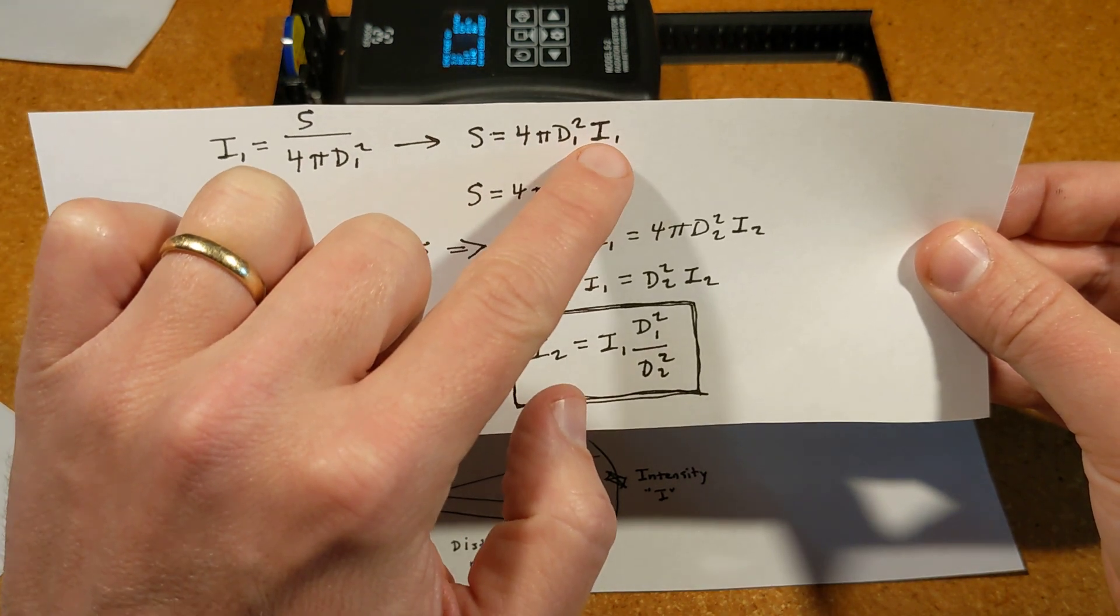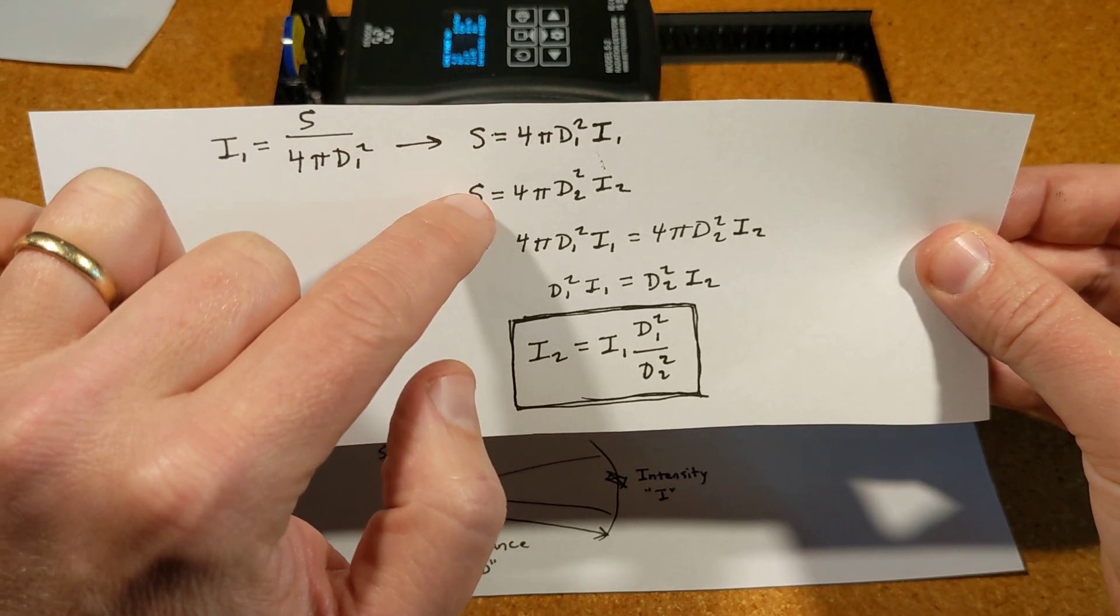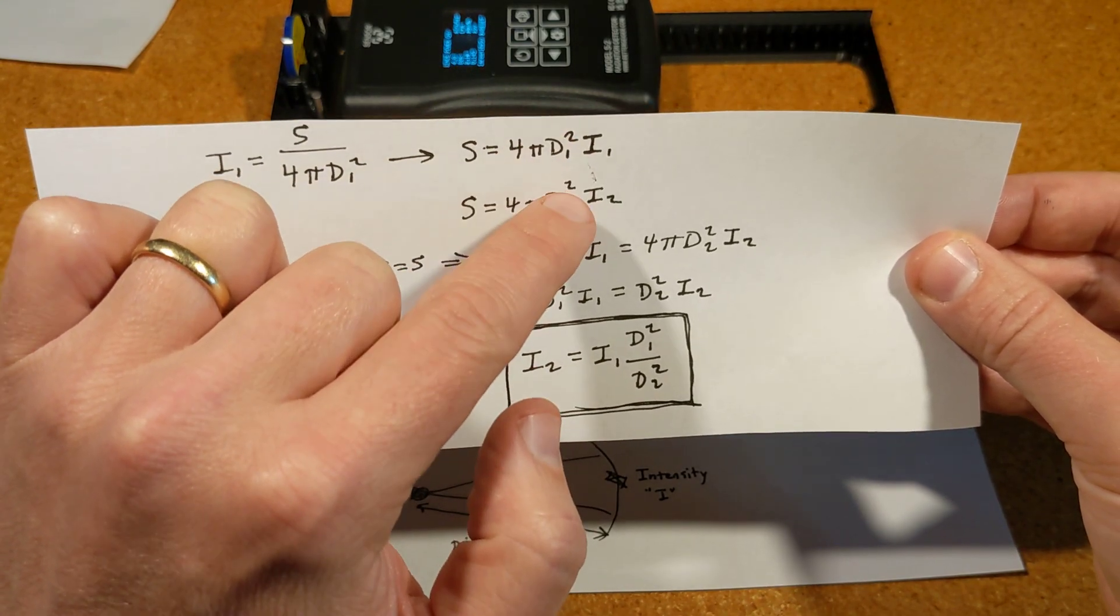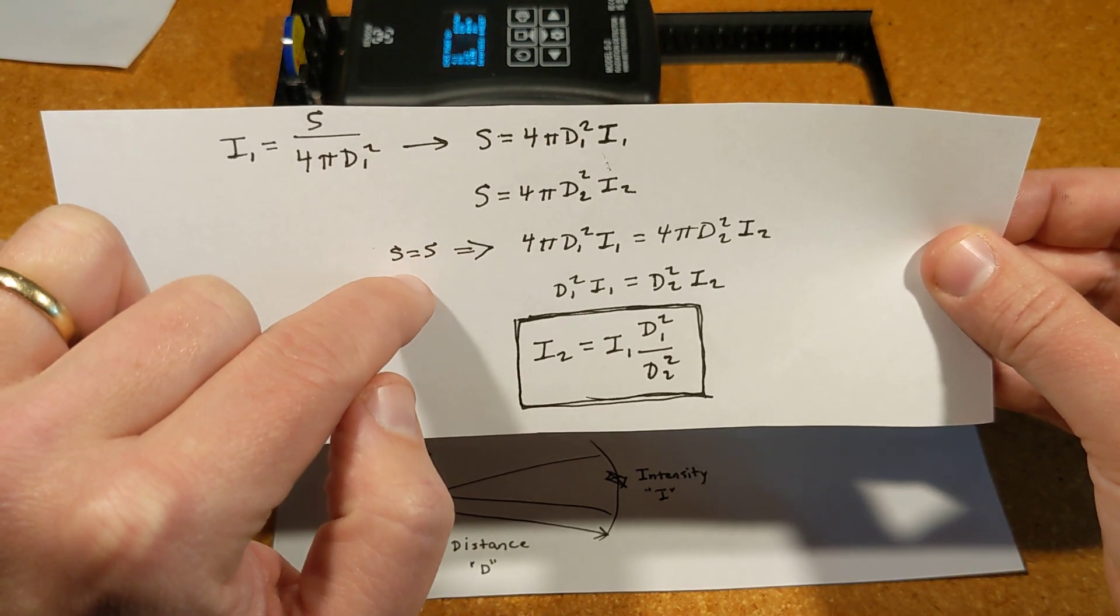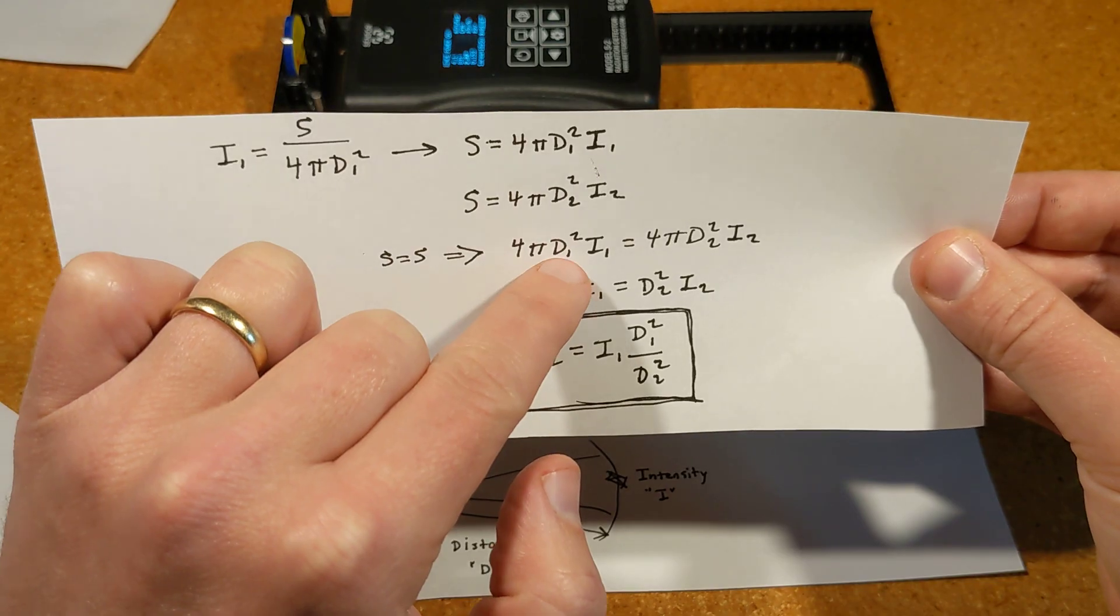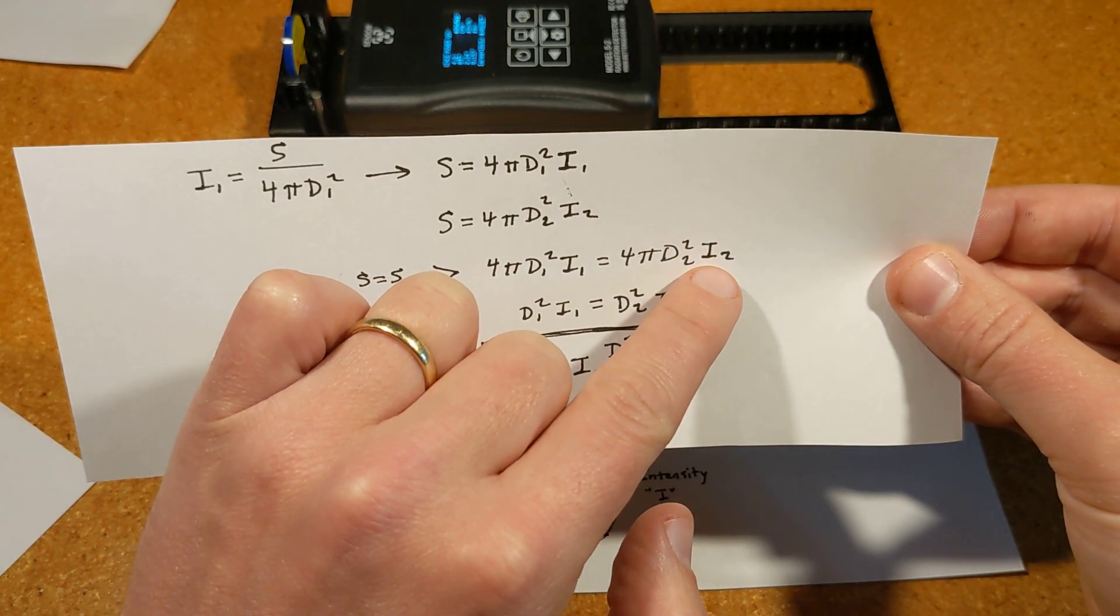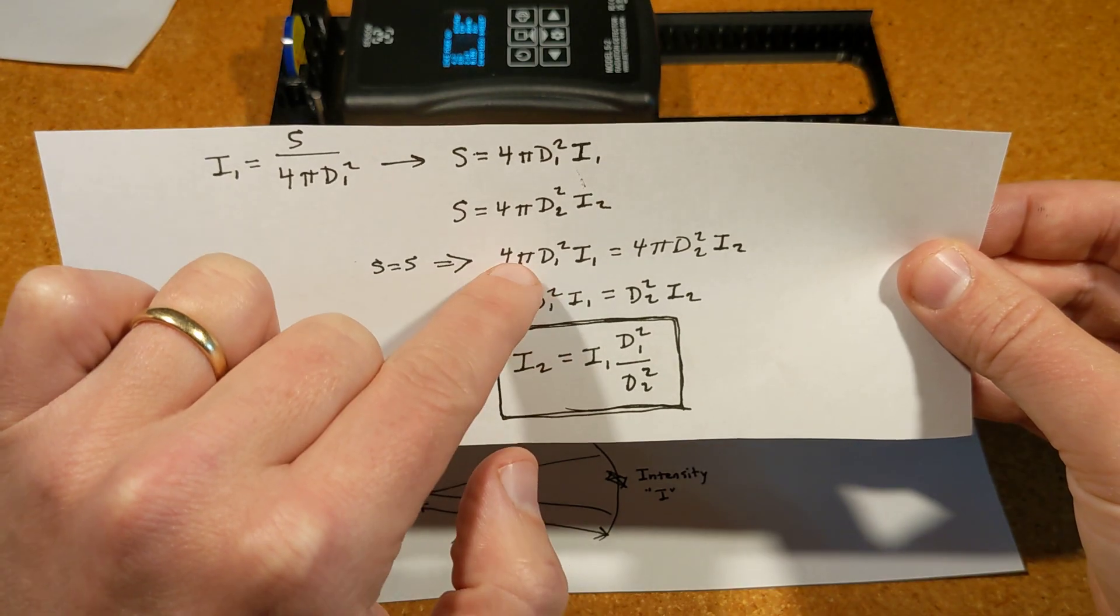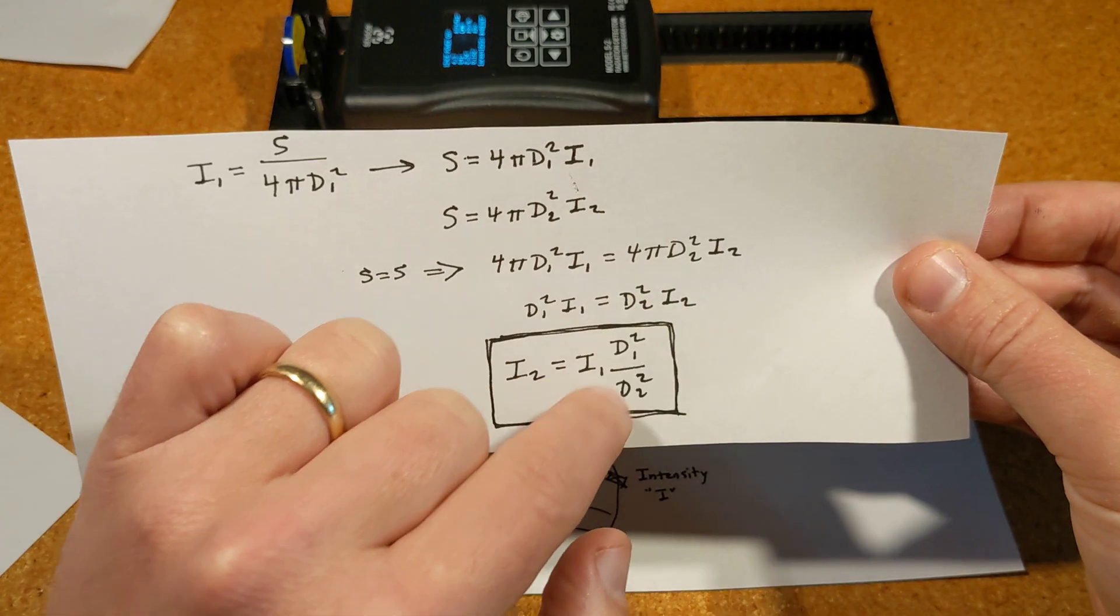This means S equals S becomes 4πD₁² times I₁ equals 4πD₂² times I₂. So that 4π cancels out and we have D₁² I₁ equals D₂² I₂.